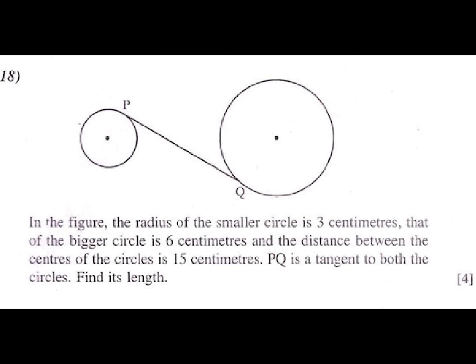18th question: In the figure, the radius of the smaller circle is 3 centimeters, that of the bigger circle is 6 centimeters and the distance between the centers of the circles is 15 centimeters. PQ is a tangent to both the circles. Find its length.